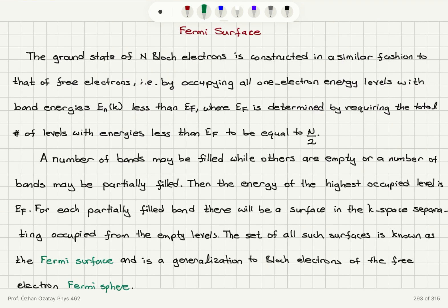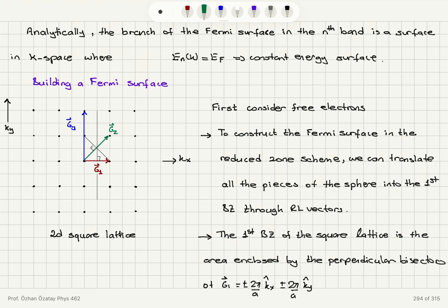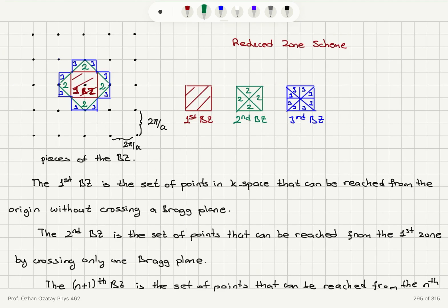The surface where E_n(k) equals E_F is a constant energy surface — the Fermi surface. For free electrons this was the Fermi sphere, but for Bloch electrons the Fermi surface can be quite different. The procedure for building a Fermi surface involves going through the reciprocal lattice Wigner-Seitz primitive cells to find the first, second, and third Brillouin zones, then folding them into the first Brillouin zone in the reduced zone scheme.